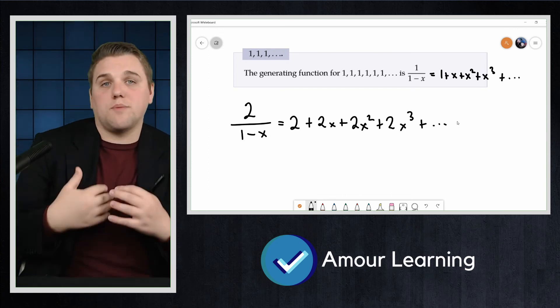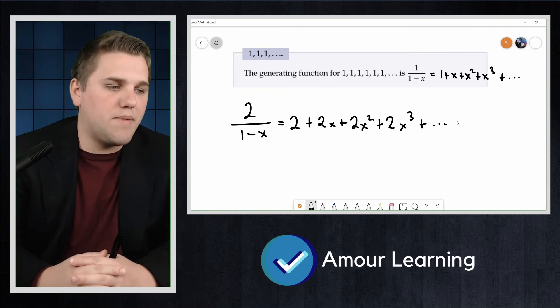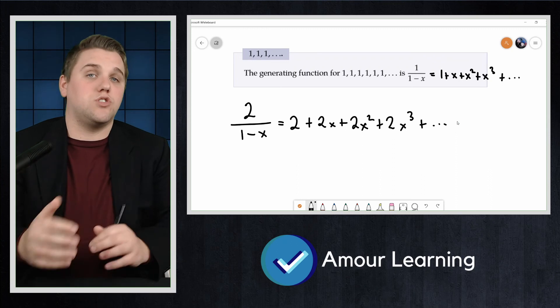So we can multiply that fraction 1/(1-x) by 2 and we'll multiply all the terms by 2 as well. This generates the sequence 2, 2, 2, 2, 2.